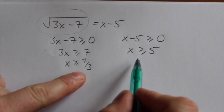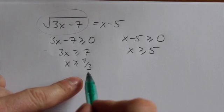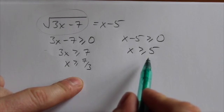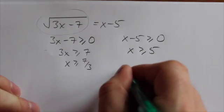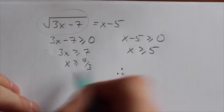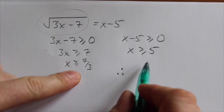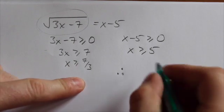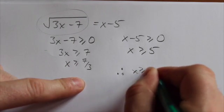Now, when you compare these two answers, x is greater than or equal to 7 thirds, and x is greater than or equal to 5, it turns out that the overriding restriction where both are true is x greater than or equal to 5.